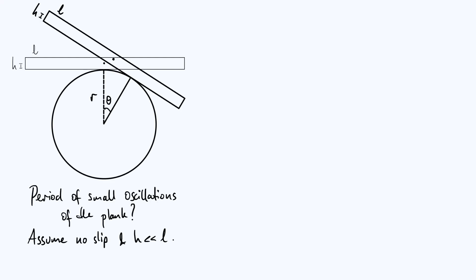Let's deal with the gravitational potential energy first. We're going to have to define a mass for our plank — let's say it has a mass of m. It's not going to appear in our final result, but it's useful to work with. The gravitational potential energy, EP, is just mg times y, where y is the height of the centre of mass of the plank above some reference point.